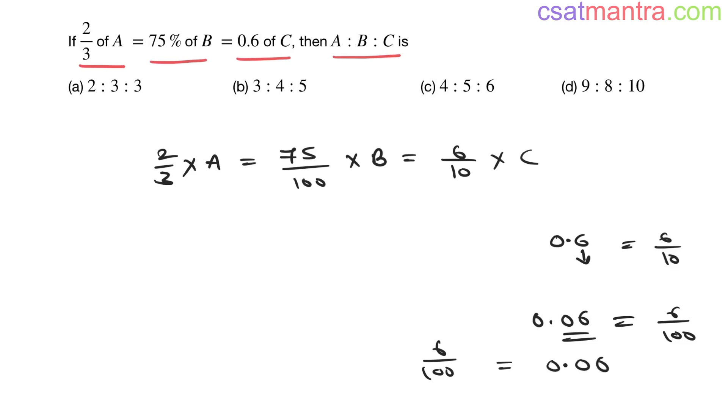After decimal you would be having 2 digits: 1, 2, 3 is 100. So it would be 1.23. After decimal you would be having 2 digits because we have 2 zeros.